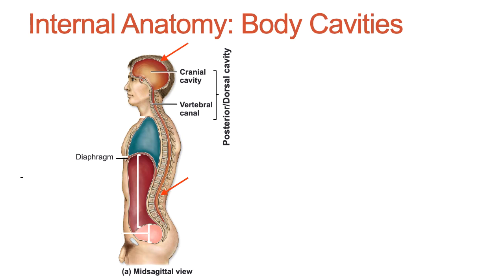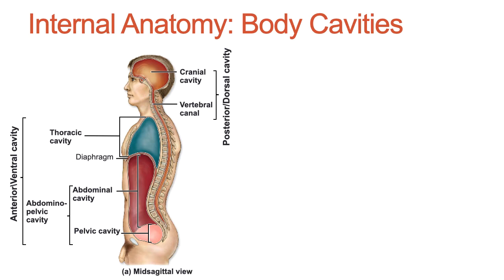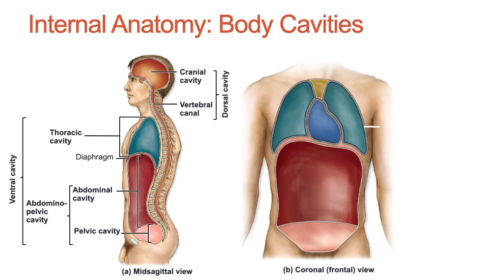The anterior cavity, also referred to as the ventral cavity, has two main subdivisions: the thoracic cavity and the abdominopelvic cavity. The abdominopelvic cavity is further divided into the abdominal cavity and the pelvic cavity.